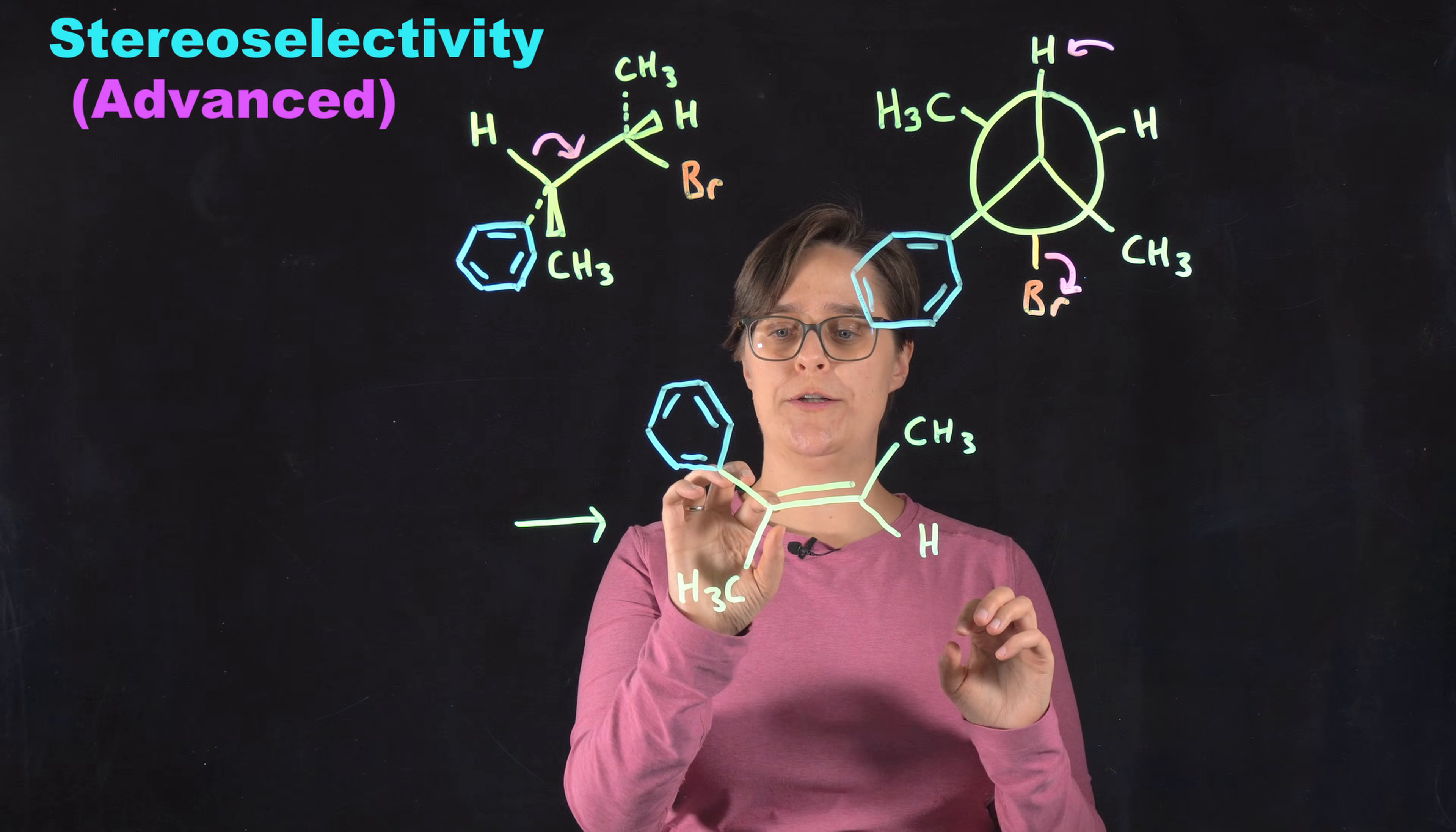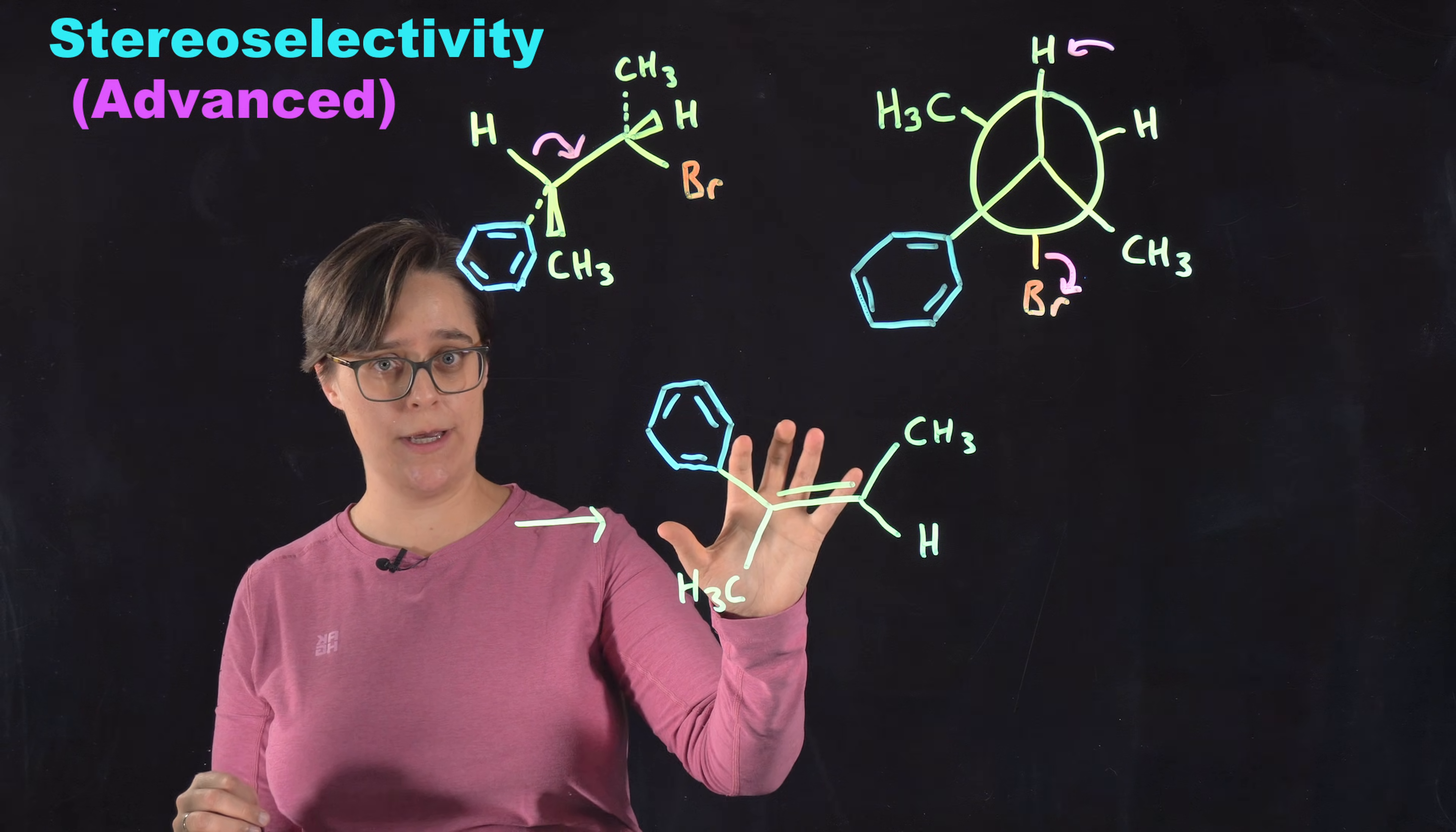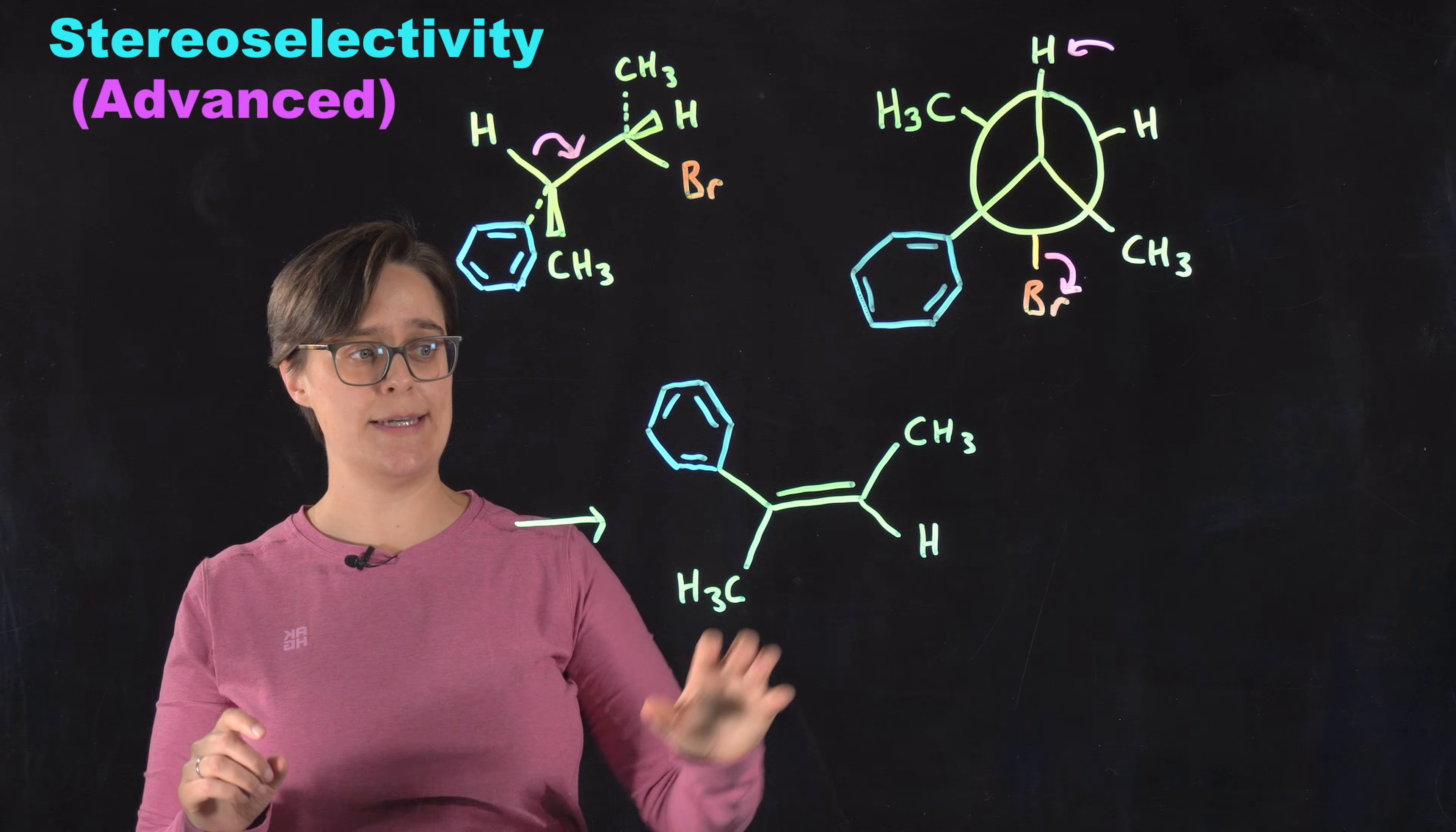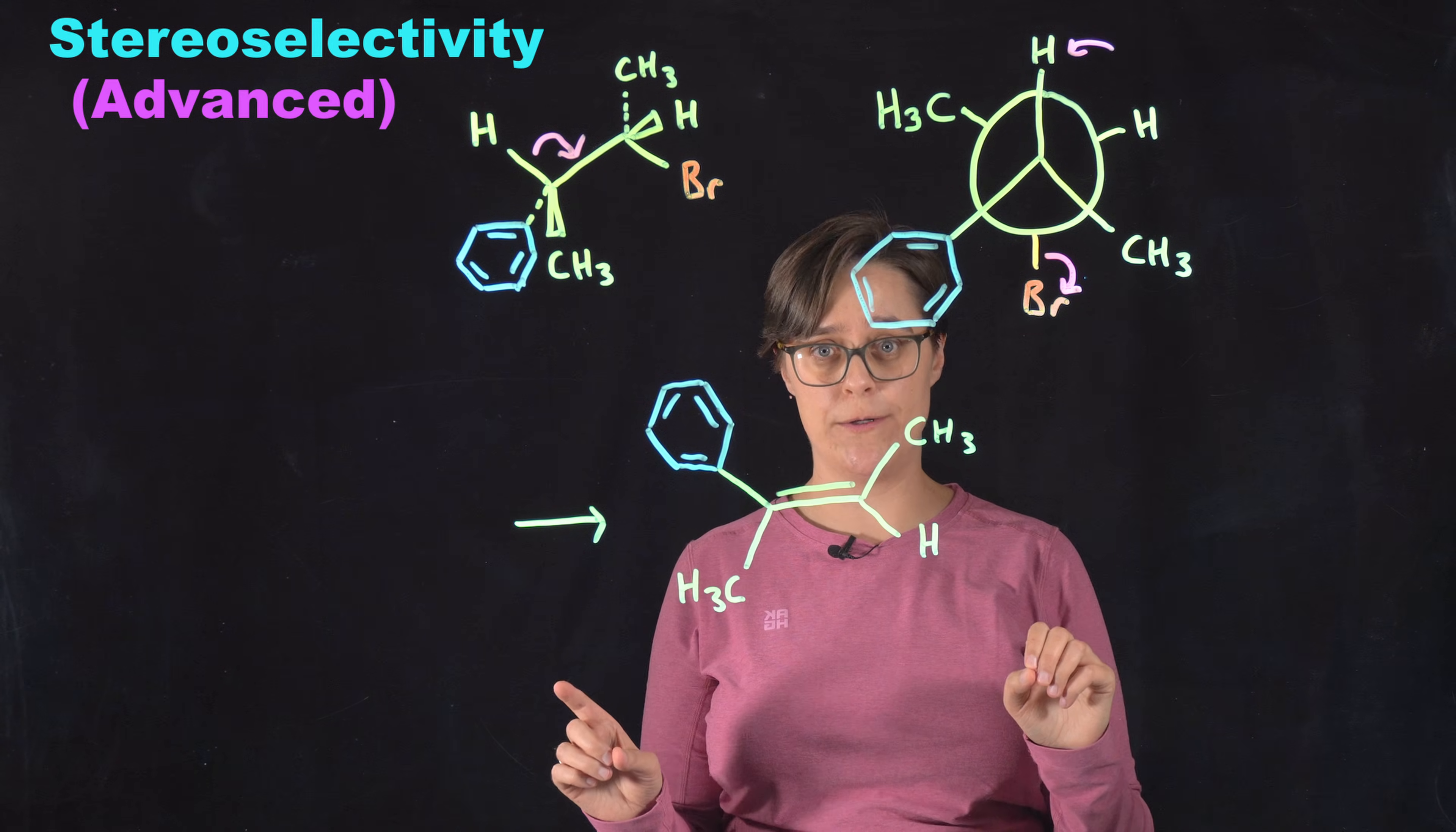So in this case, the largest group on this left side is the phenyl group. The largest group on this right side is the methyl group. They are on the same side. This is not a case of this being a major product and the other stereoisomer being the minor product. No, in this case, this is the only one of these stereoisomers that is actually going to form because we have to have this dihedral angle of 180 degrees.